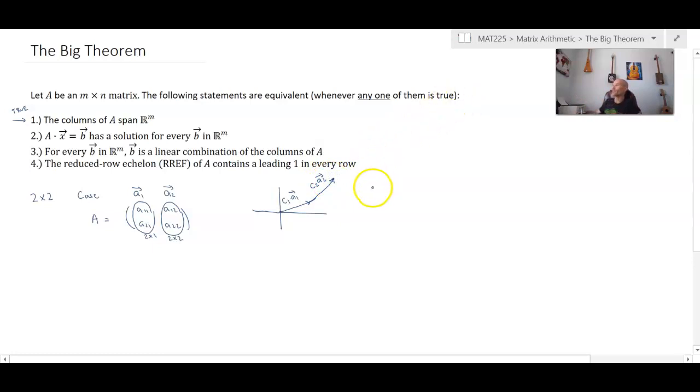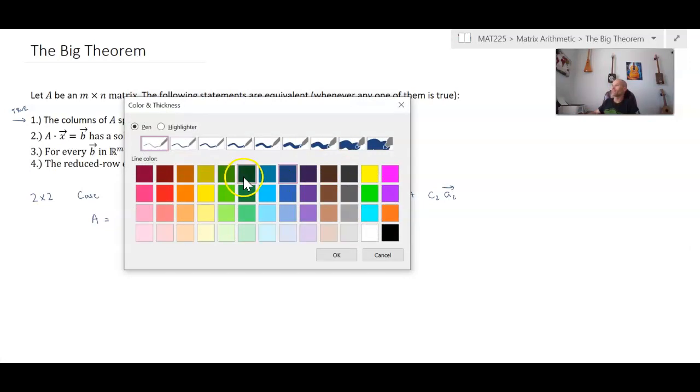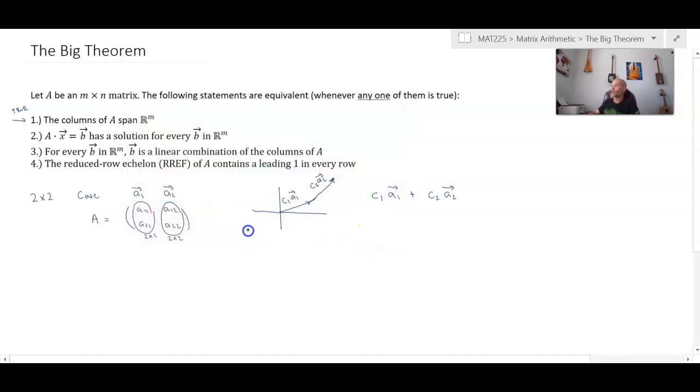And I can arrive at any location I want in R2. So this representation is C1 A1 plus C2 A2. This is our tip to tail representation of vectors. I can identify any location I want. Now I'm not limited to that. I can pick a location down, say in the third quadrant. And again, I can find some sort of linear combination of these two vectors again, to arrive at that location. That's the claim that I'm making here, that the columns of A do span R2. Okay. So this is R2 that we're looking at. We're in two dimensions. We have two axes, an X and a Y.